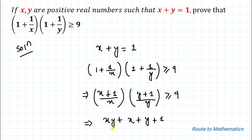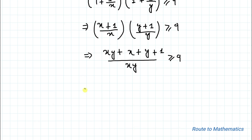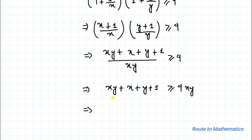Multiplying each term we get: xy plus x plus y plus 1, all divided by xy, greater than or equal to 9. By cross multiplication we have xy plus x plus y plus 1 greater than or equal to 9xy. Taking xy to the right-hand side gives us x plus y plus 1 greater than or equal to 8xy.